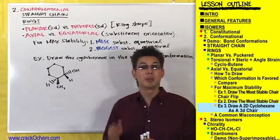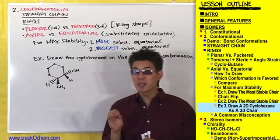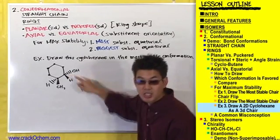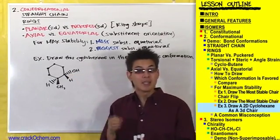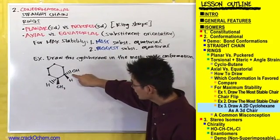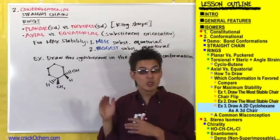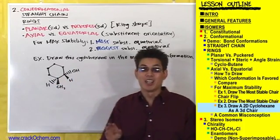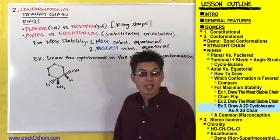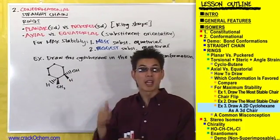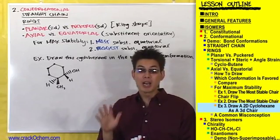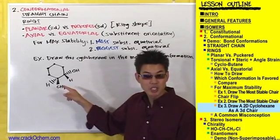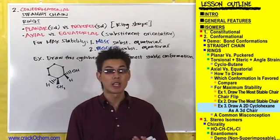This gives a lot of people trouble, but it's actually pretty simple. A common misconception that screws a lot of people up is that they try to assign these wedges and dashed lines to mean either axial or equatorial. Whether you are a dashed line or a wedge line, this has absolutely nothing to do with whether that substituent is axial or equatorial. Do not try to look at this planar conformation and assign an axial or equatorial conformation to these substituents — it does not tell you whether the substituents are axial or equatorial.